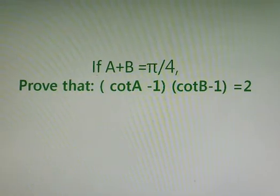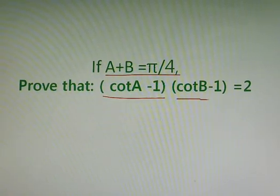You can see the question on the screen. If A plus B is equals to pi by 4, then you need to prove bracket cot A minus 1 into bracket cot B minus 1 is equals to 2.